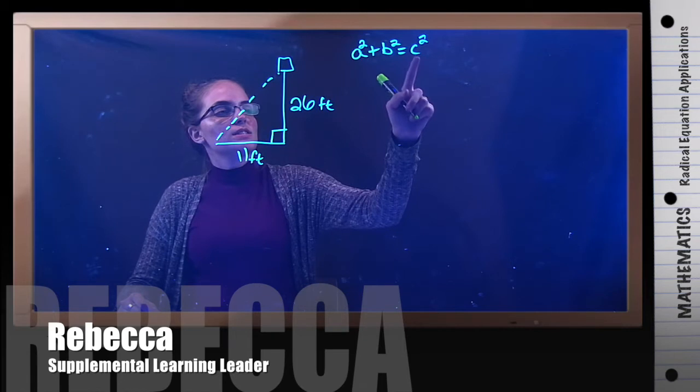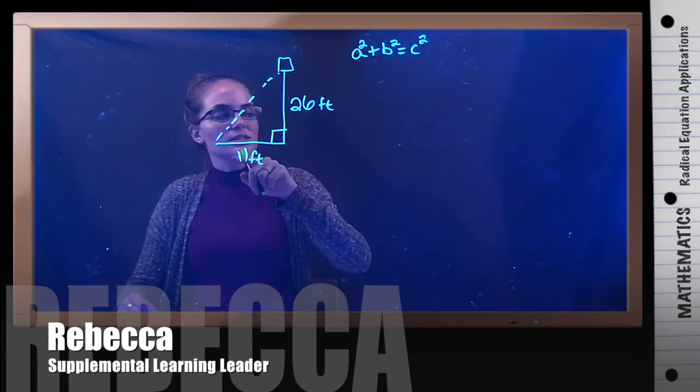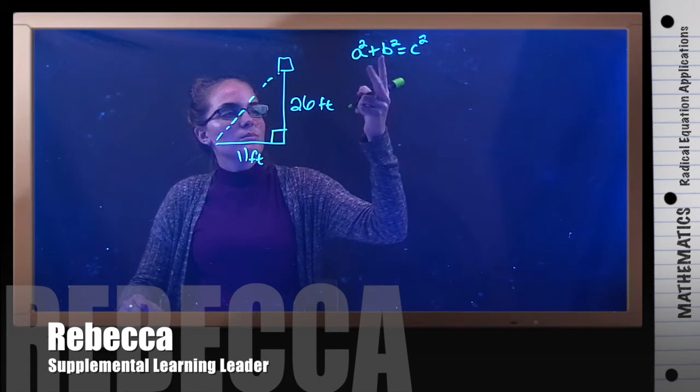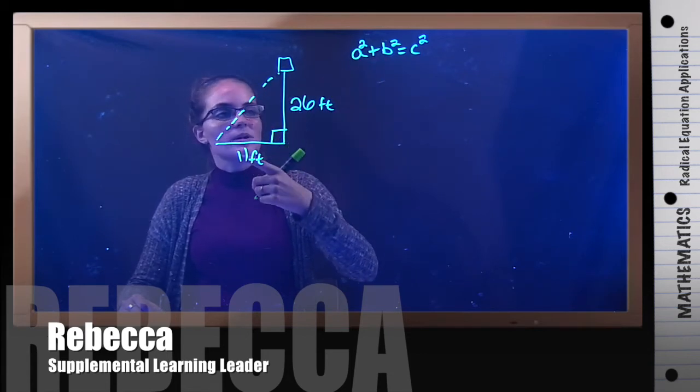And remember that c is always the hypotenuse, which is the longest side of the triangle. And a and b can be either one of the other sides. It doesn't matter.